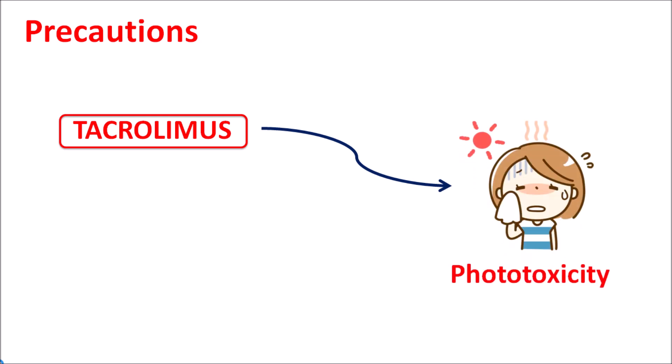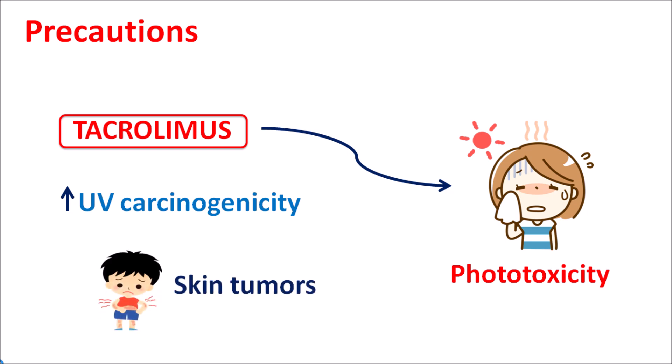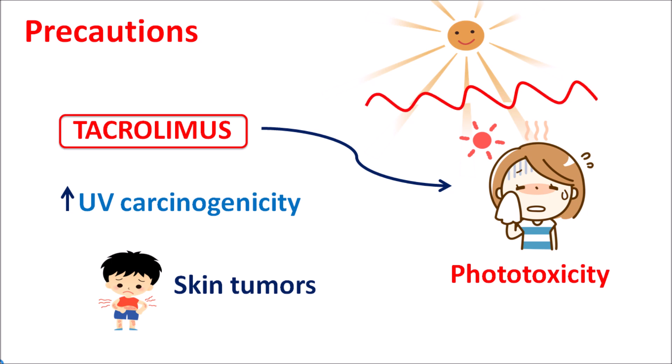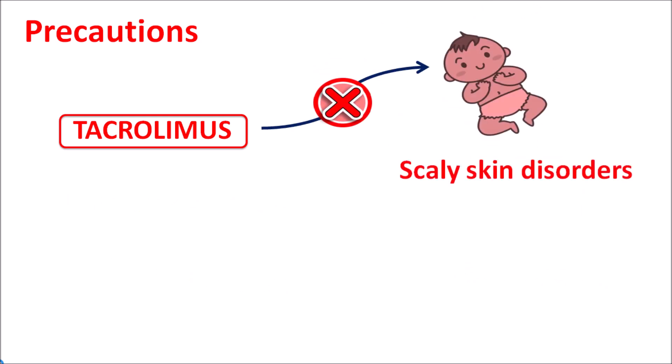Similarly, this drug can increase the risk of phototoxicity. Even if it is not completely phototoxic, it can increase the risk of UV radiation carcinogenicity — increasing the risk of cancer formation on exposure to high UV radiation. It can also increase skin tumors when the person is exposed to harmful radiation. That's why tacrolimus should be carefully used and direct exposure to sunlight or harmful radiation should be avoided.